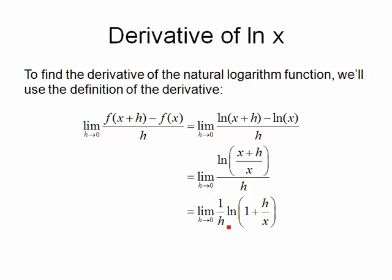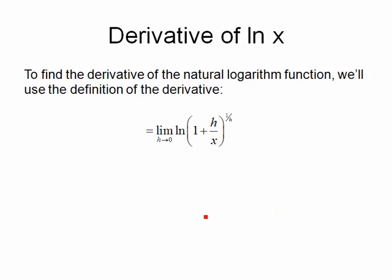Now what I'm going to do is take that number 1 over h that's sitting out in front and move it so that it becomes a power. Again I'm just using one of the rules for logarithms that said multipliers can come inside of logarithms as powers. That leaves me with the limit as h approaches 0 of ln of 1 plus h over x raised to the 1 over h.